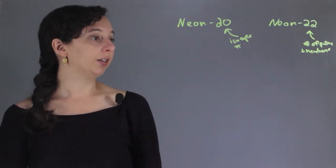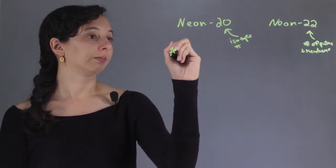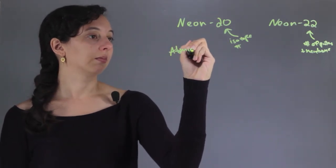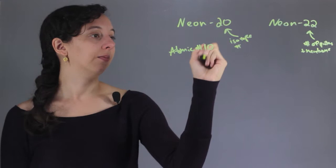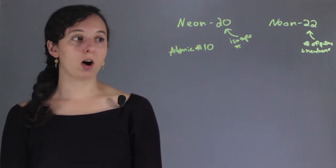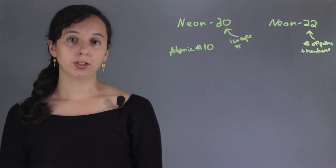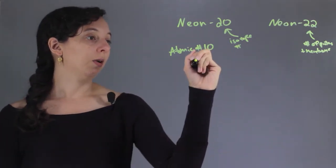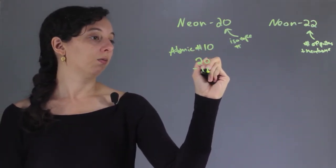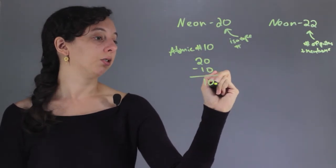And so Neon is atomic number 10. So this means no matter what, Neon is going to have 10 protons. So using some subtraction, Neon-20 will have 10 neutrons.